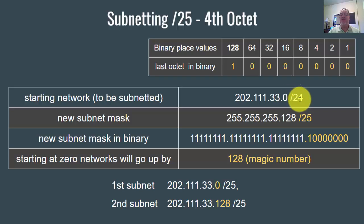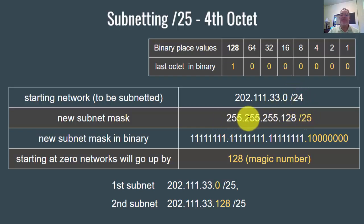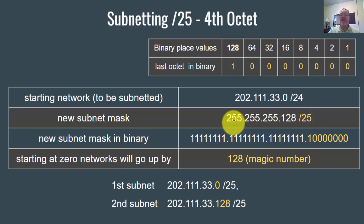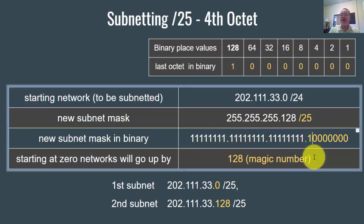We're going to change the subnet mask from slash 24 to slash 25. So in the last octet of the subnet mask, which was normally 255.255.255.0, it's now slash 25, meaning 255.255.255.128. And in binary, it looks like this — the change is we go from all zeros to now a one here.